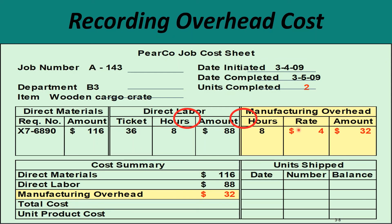After we calculate and apply the POHR, the amount is entered in the section of the job cost sheet for manufacturing overhead. If overhead is applied on the basis of direct labor, we take the direct labor amount and multiply it by the overhead rate to get the manufacturing overhead figure. This is then included in the cost summary, and when we add the three elements together — direct materials, direct labor, and manufacturing overhead — we get our total cost of the job.